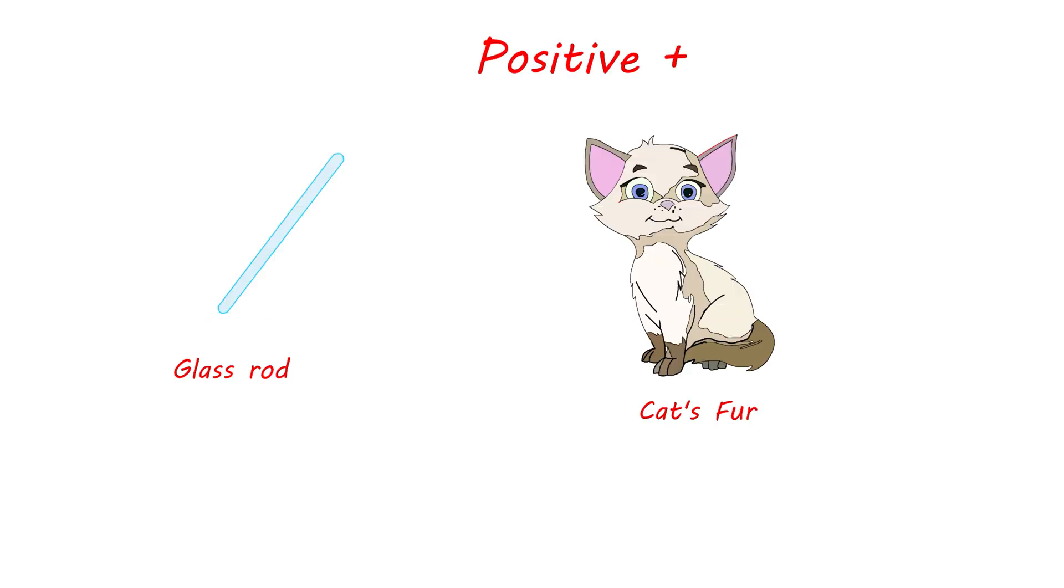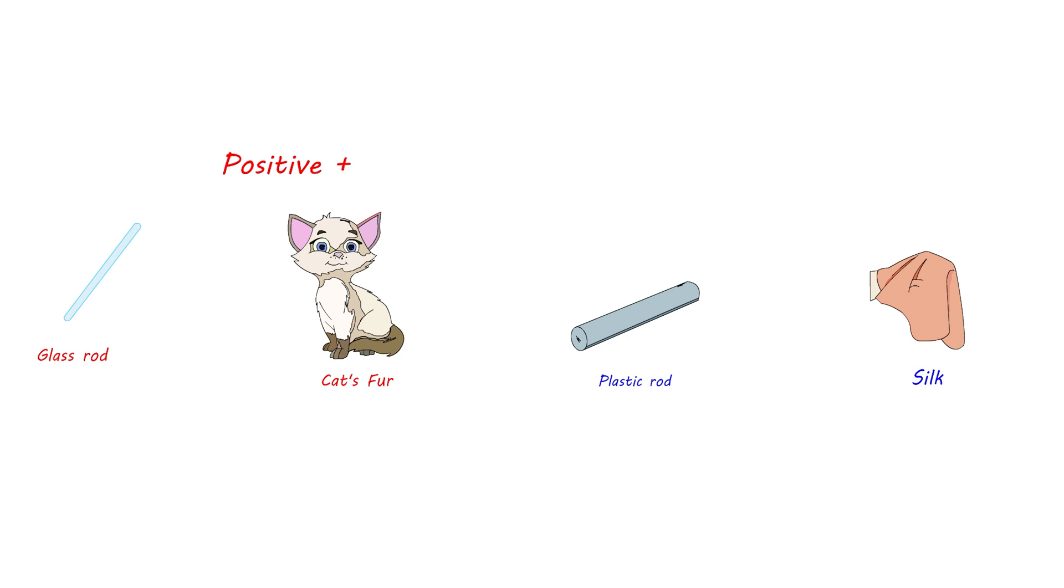By convention, the charge on glass rod or cat's fur is called positive, and that on plastic rod or silk is termed negative. If an object possesses an electric charge, it is said to be electrified or charged. When it has no charge it is said to be electrically neutral.